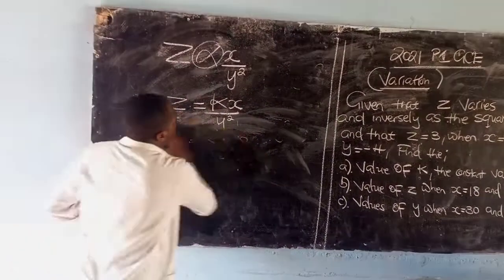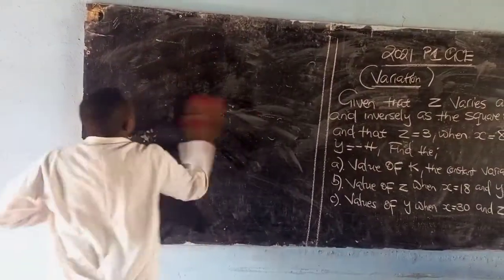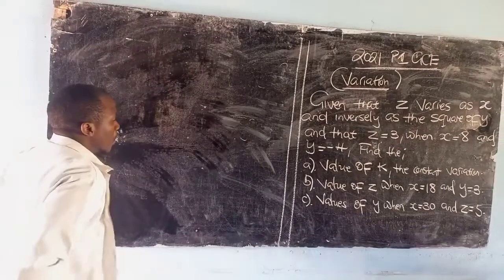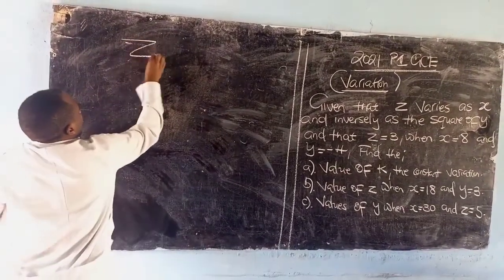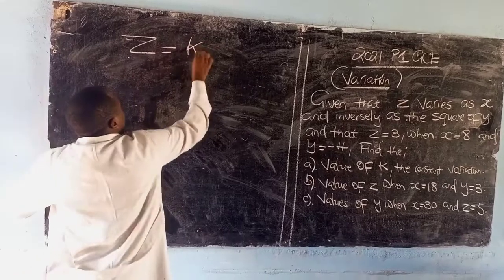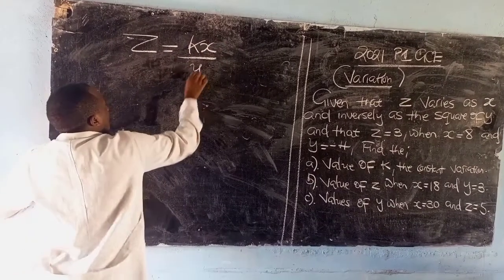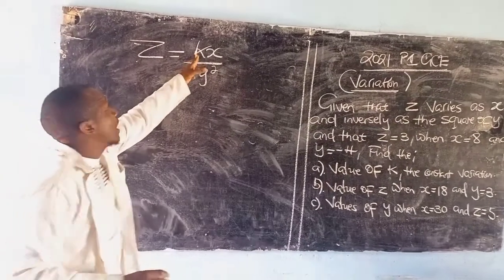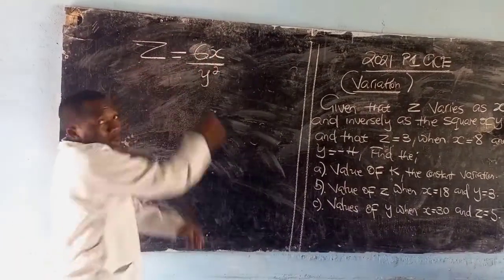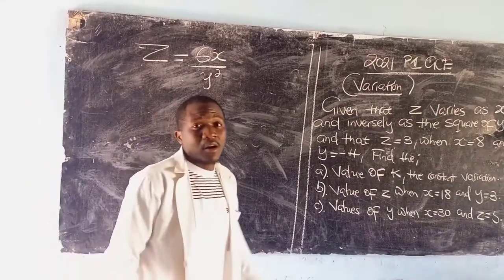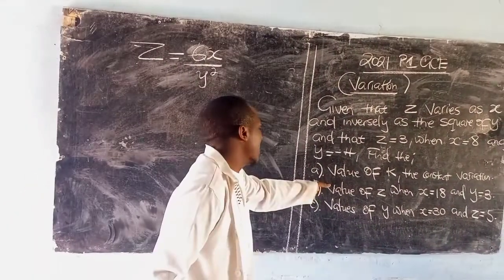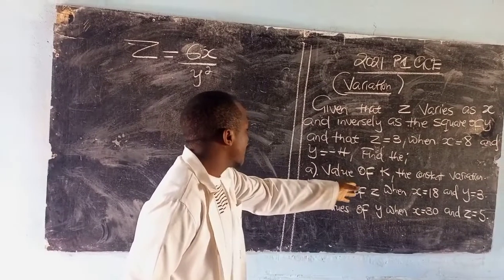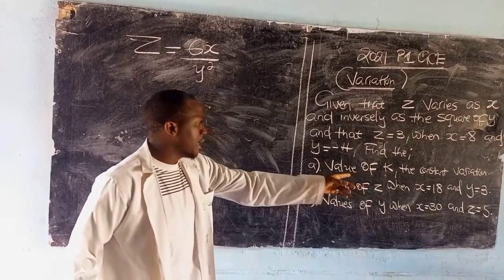So now let's go to the other questions. Our equation was z equals kx over y squared. So since we have the value of k, where there is k we can now replace the correct value. This time around it is 6.